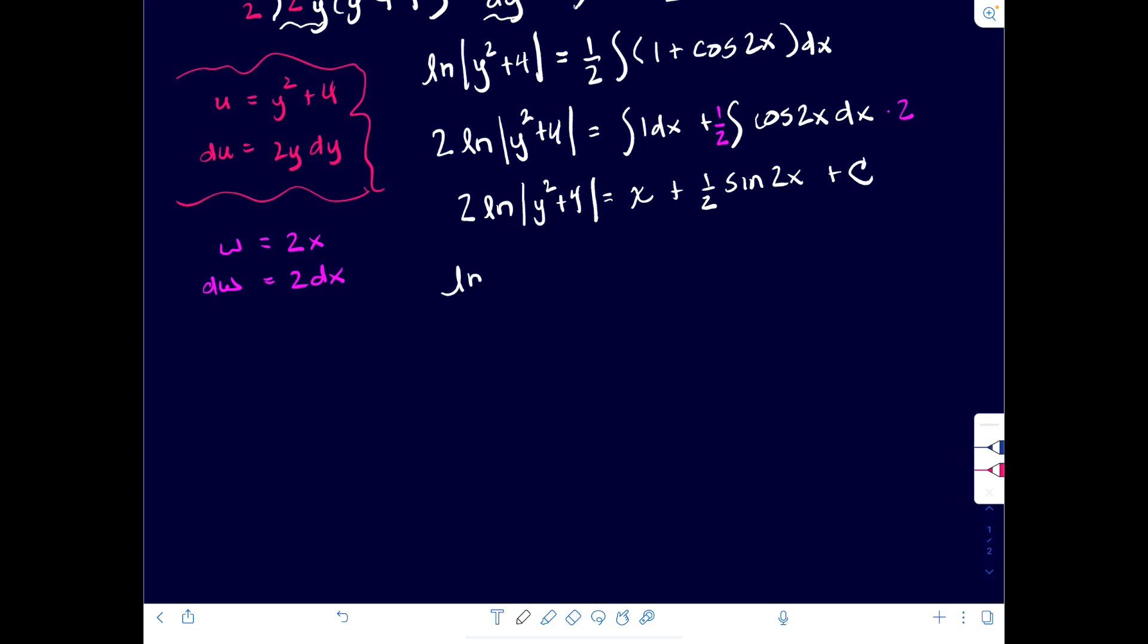So this could be written as, we don't need the absolute value on the y squared plus 4 because it's positive. And now we can bring in the, using the power rule, that power rule, that 2, so we'd have the quantity y squared plus 4 squared in that natural log, would equal 2x plus 1 half times sine of 2x plus c, our constant of integration. And we're good to go.